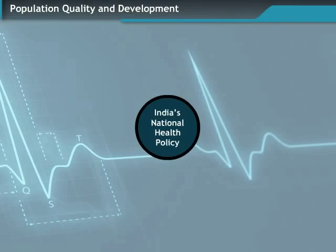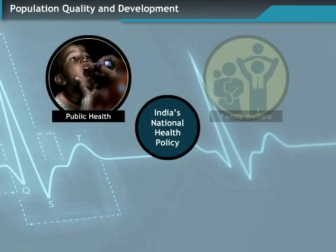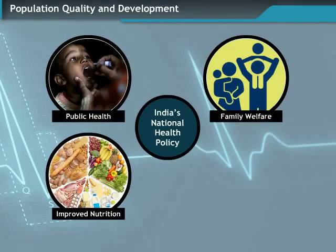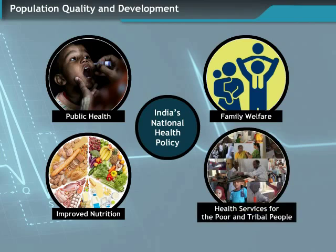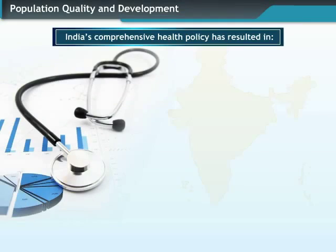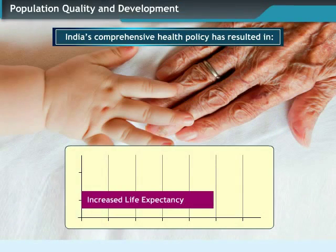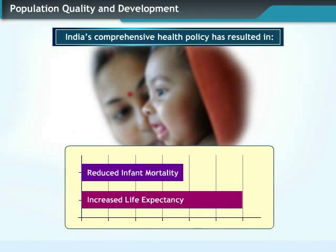India's national health policy aims at improving public health, family welfare, and nutritional services. In the last six decades, the government has paid great attention towards the health of the poor and tribal communities. As a result of India's comprehensive health programs, there has been an increase in average life expectancy, and the infant mortality rate has gone down due to better mother and child care programs.